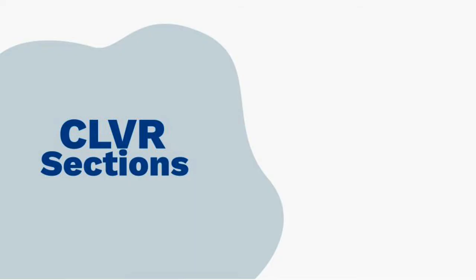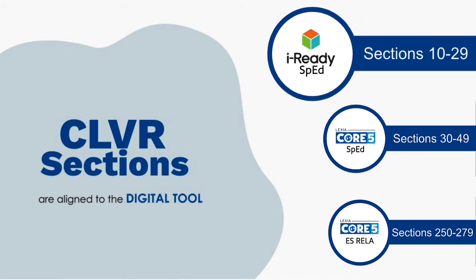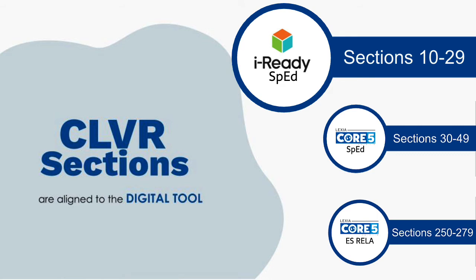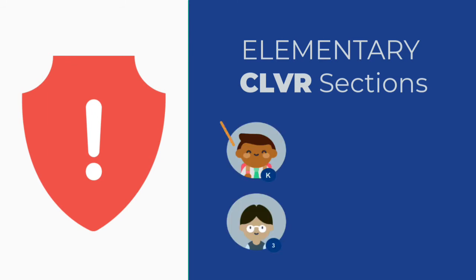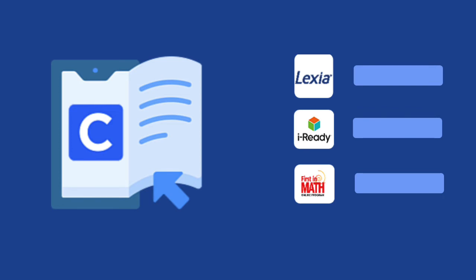The section is based on the specific digital tool the students and teachers need access to. For example, students who need iReady through special education would be assigned to a section between 10 and 29. It's important to note that at the elementary level, instead of corresponding to a grade level, the sections are directly related to the digital tool. Please refer to the chart in the Clever Course Flag Guide for more details.